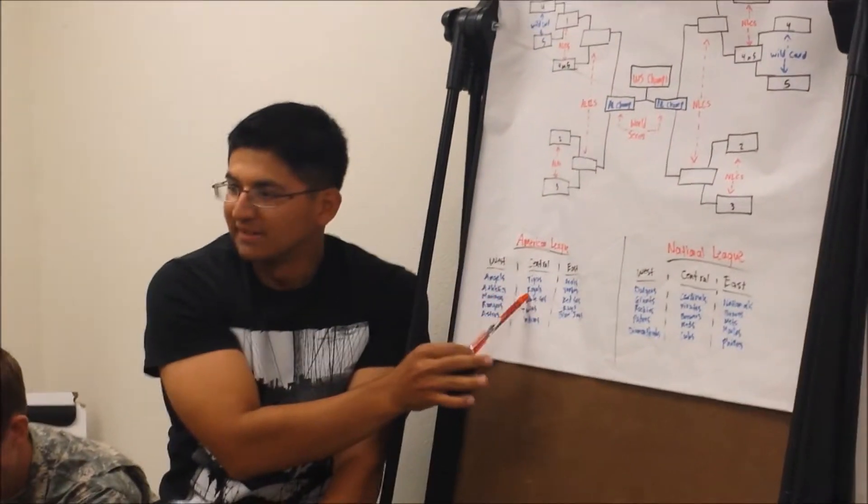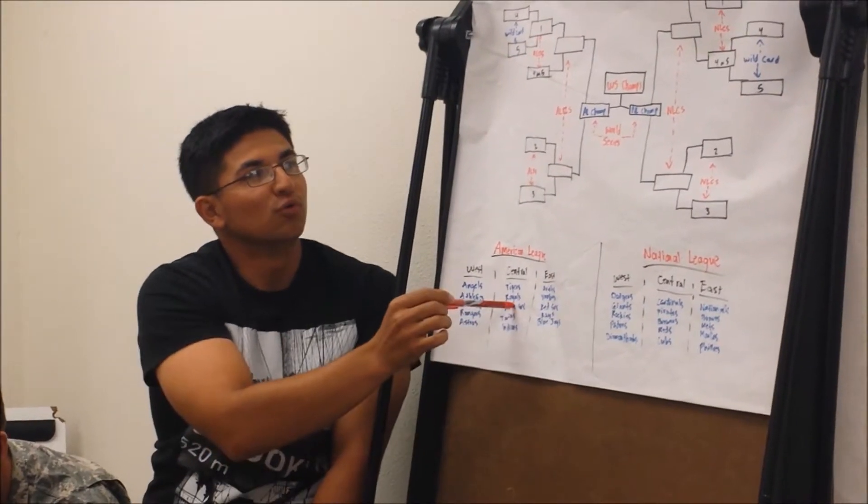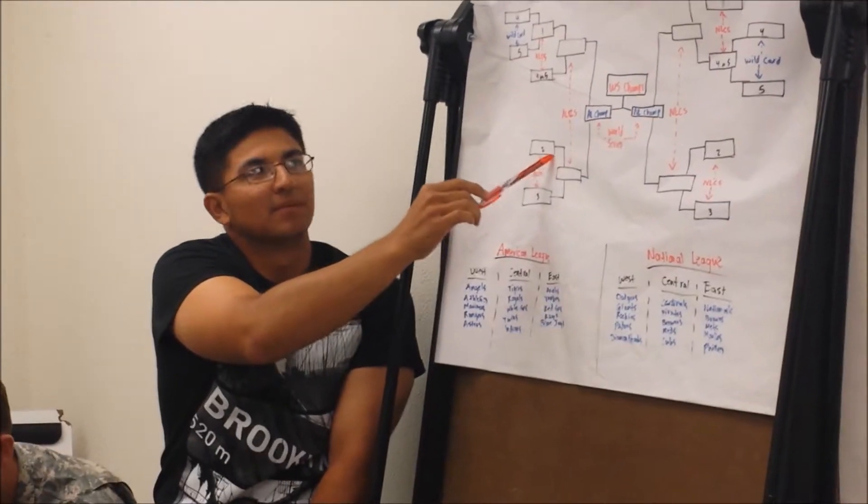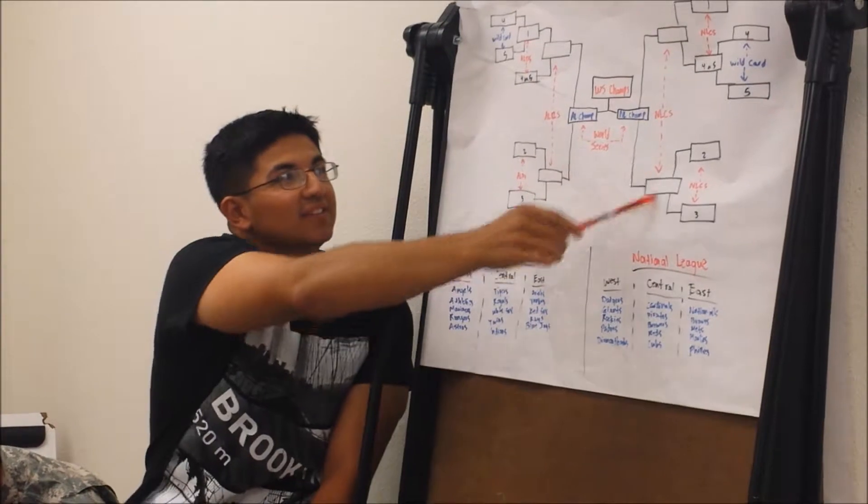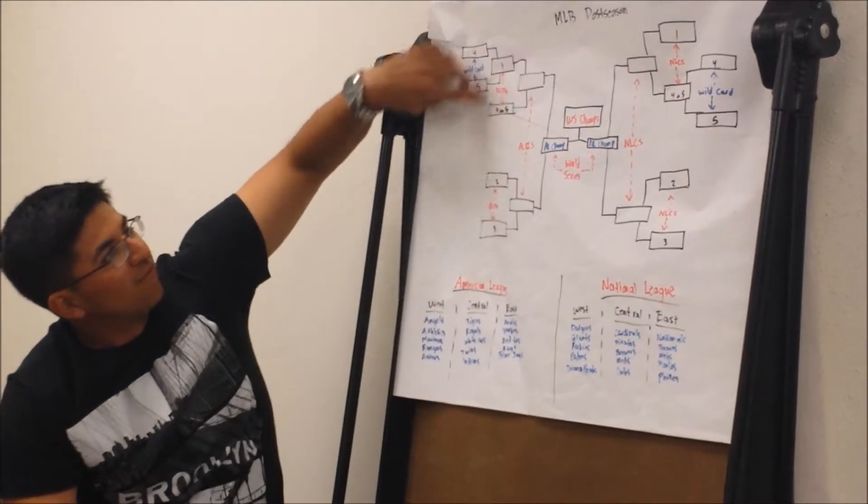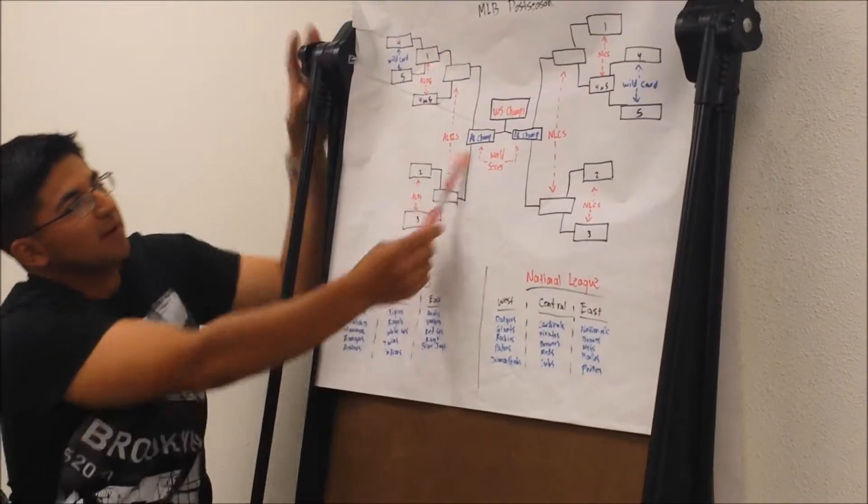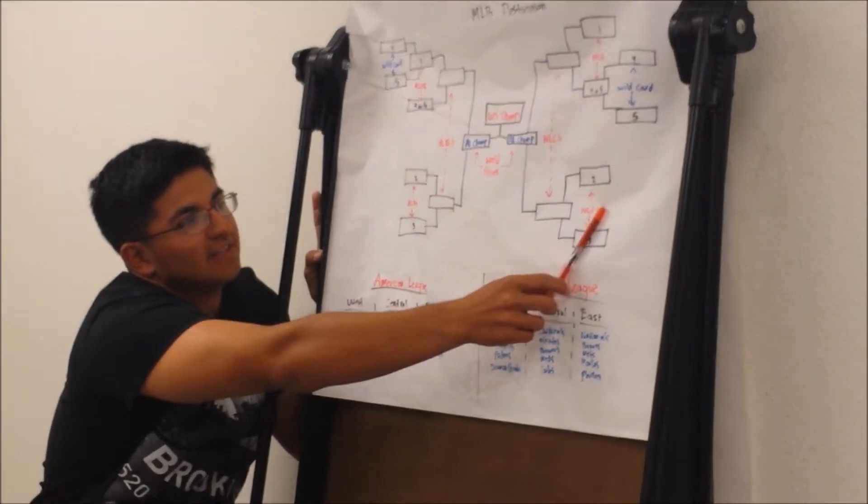Now that we know the basics of which teams go where, I'll explain the process of who qualifies for the playoffs or the postseason. As you can see this bracket here, this is what we'll explain. You've got five teams per league that make it to the playoffs. You've got the American League on this side of the bracket, the National League on this side of the bracket.